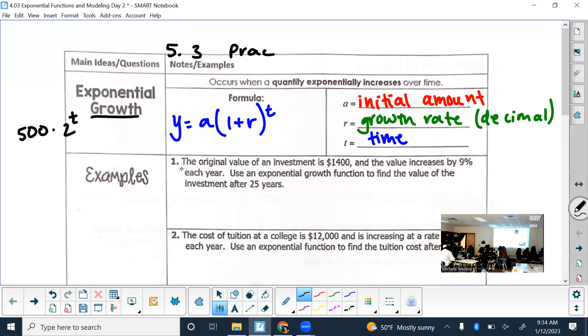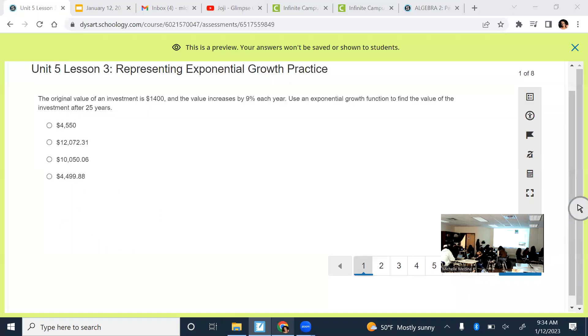So on problems like number one on your practice, what is my starting amount? 1,400. So you put that in the A position. Original value of investment is 1,400. What's the growth rate? 9%. But I don't want to put plus 9 in there. What would I put? 0.09, because it has to be written as a decimal.